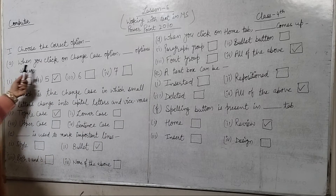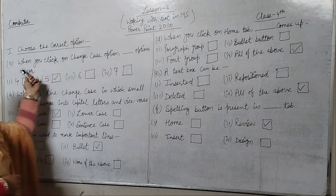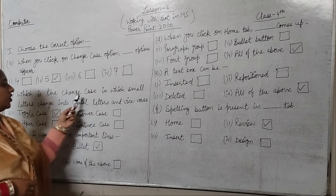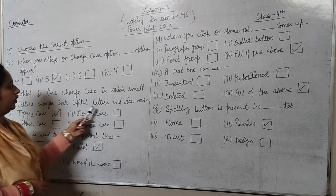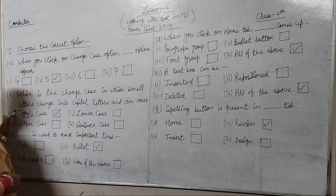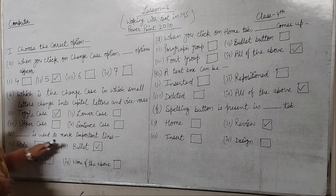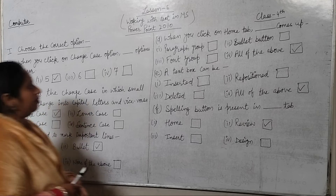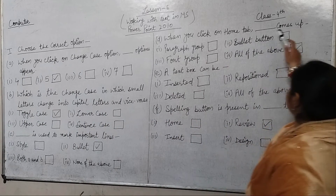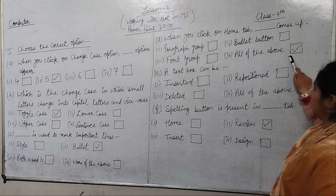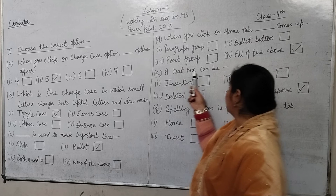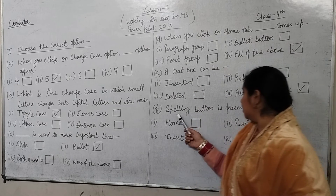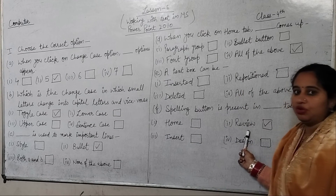Summary of answers: Part A — when you click on Change Case, 5 options appear. Part B — the change case that switches small letters to capital and vice versa is Toggle Case. Part C — Bullet is used to mark portrait lines. Part D — when you click on Home Tab, all of the above comes up. Part E — a text box can be all of the above. Part F — the Spelling button is in the Review Tab.